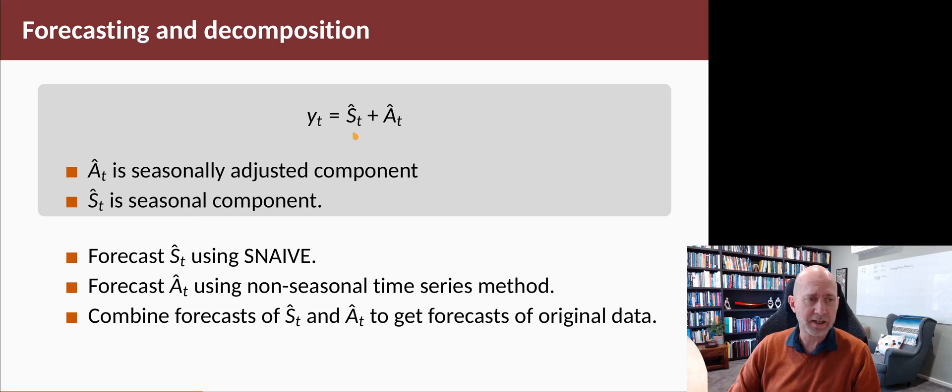We can write it like this: the original data equals a seasonal component S and a seasonally adjusted component A. The idea is we're going to forecast S and A, then add the forecasts together to get a forecast for Y.